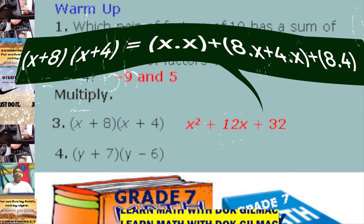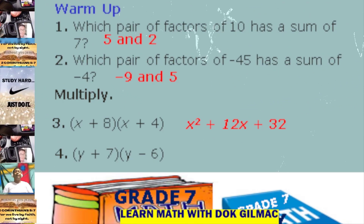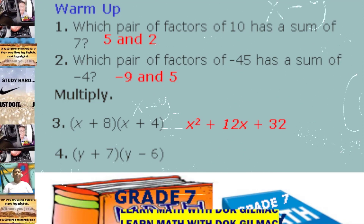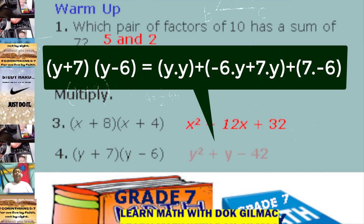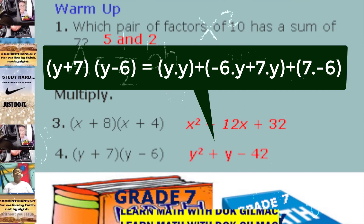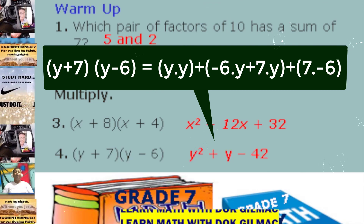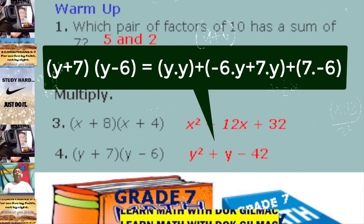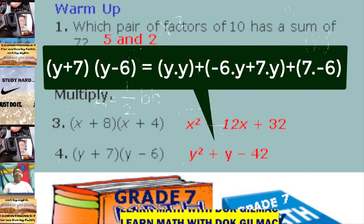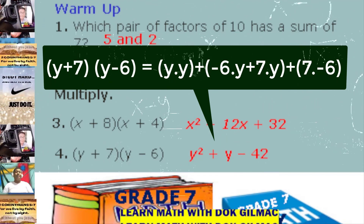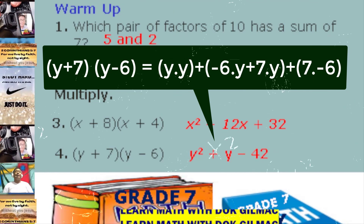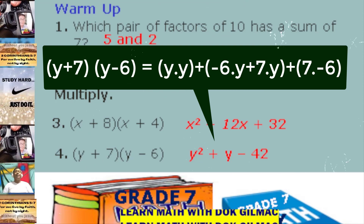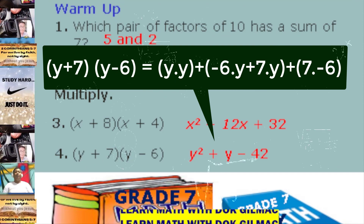Number 4. Multiply y plus 7 and y minus 6. That's right! We have y squared plus y minus 42. Since y times y is y squared, negative 6 times y is negative 6y, plus 7 times y is 7y, so we have plus y. And 7 times negative 6 is negative 42.